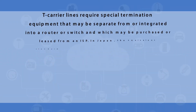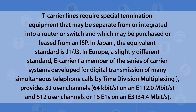T-Carrier lines require special termination equipment that may be separate from or integrated into a router or switch, and may be purchased or leased from an ISP. In Japan, the equivalent standard is J1/J3. In Europe, the E-Carrier standard was developed for digital transmission of many simultaneous telephone calls by time division multiplexing, providing 32 user channels at 64 kbps on an E1, and 512 user channels or 16 E1s on an E3.